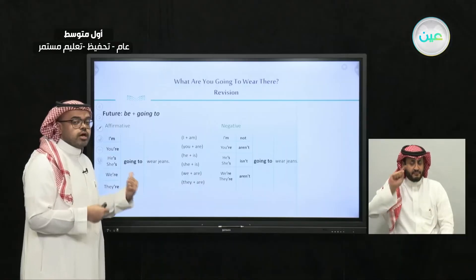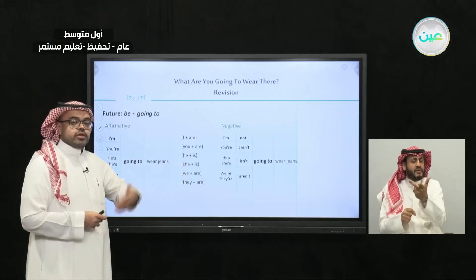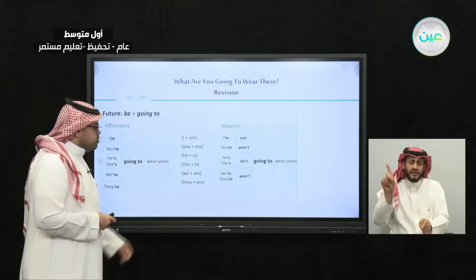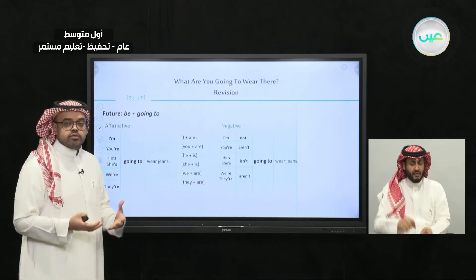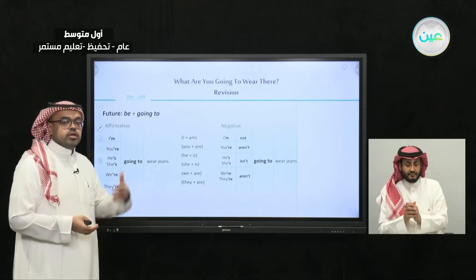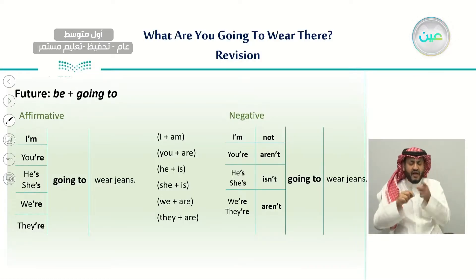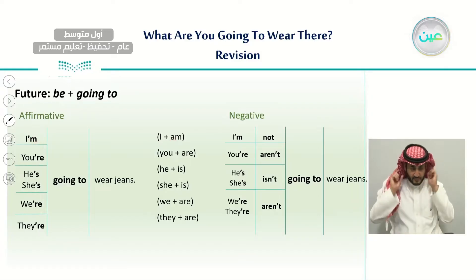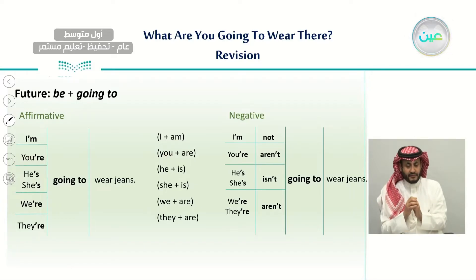It means this is something I will do in the future — maybe tomorrow, maybe next week. This is why we use 'going to.' We also use contractions: I'm, you're, he's, she's, and so on.